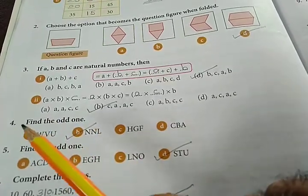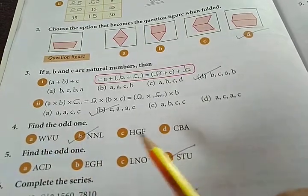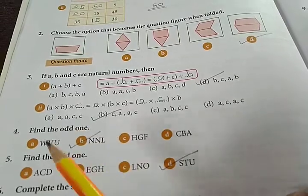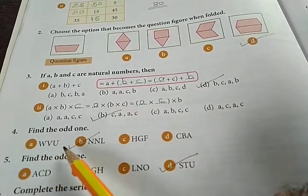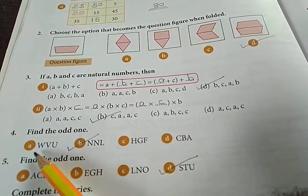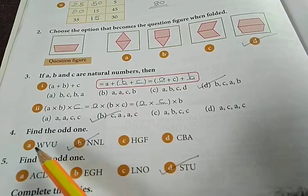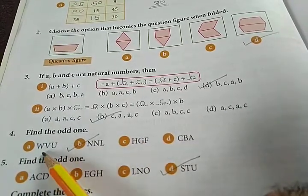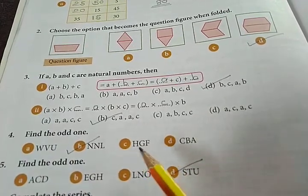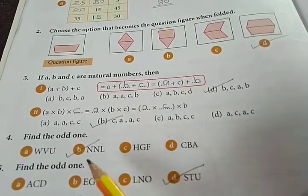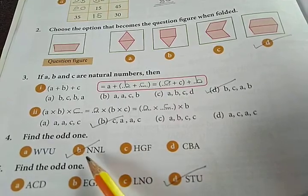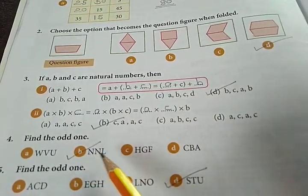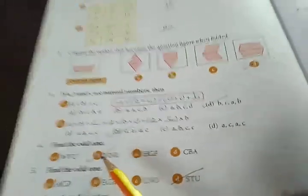Find the odd one, question number 4. From these we have to find the odd one. So it's NNL, option A. Now look at the alphabetical sequence, they have given it in reverse order. Look: u, v, w; f, g, h; a, b, c. But here it's l, n, n. This is the odd one. If it was in the same way, it should have been l, m, n.